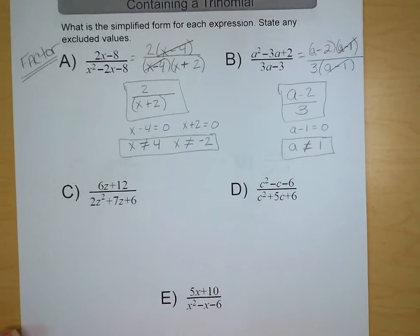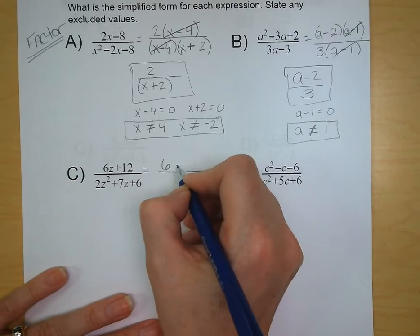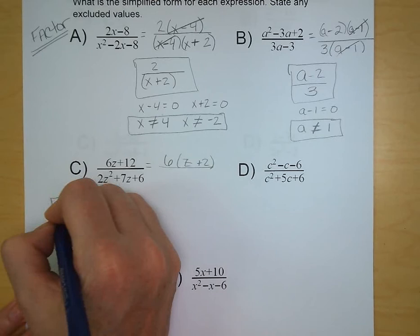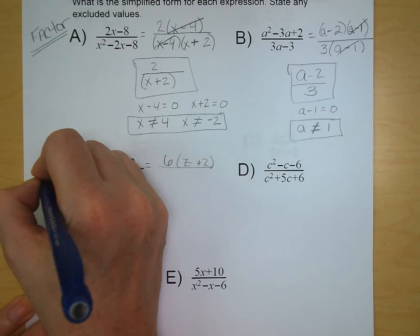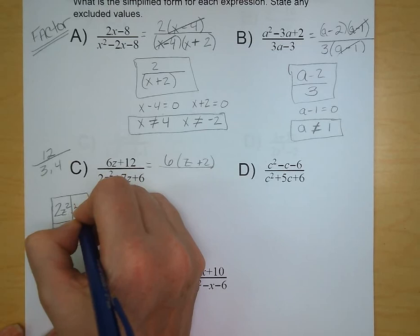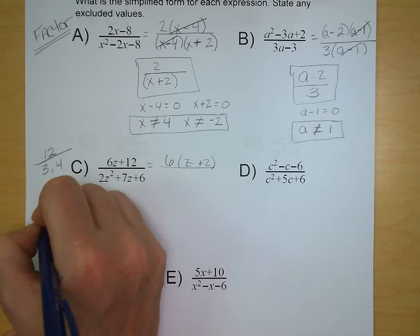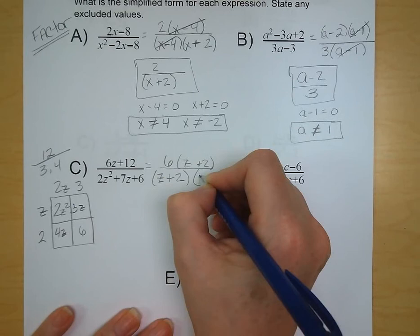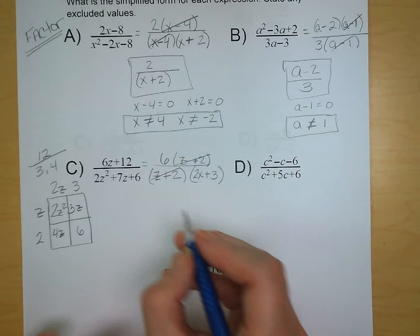Letter C: we can factor out a common factor of 6, leaving z plus 2 in the numerator. For the denominator with a leading coefficient, we use the box method: 2 times 6 is 12, so we're looking for factors of 12 that add up to 7 — those are 3 and 4. Factoring gives us 2z plus 3 and z plus 2. The z plus 2 terms cancel, and we're left with 6 over 2z plus 3.